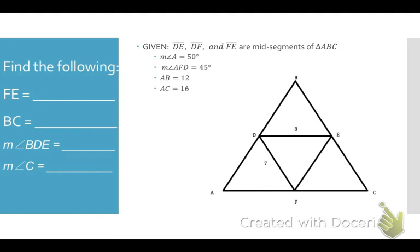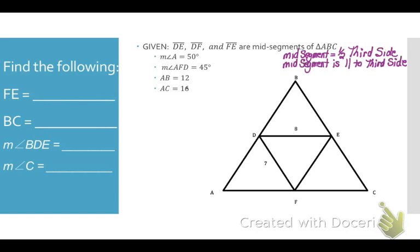Given this diagram and the fact that line segments DE, DF, and FE are mid-segments of triangle ABC, find the length of FE, the length of BC, the measure of angle BDE, and the measure of angle C. Since we're talking about mid-segments, remember that a mid-segment is always one half the length of the third side and also parallel to the third side.